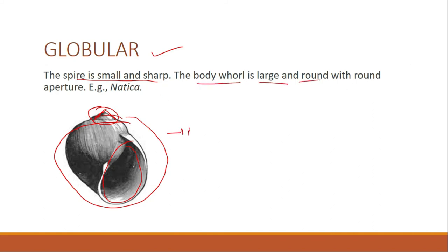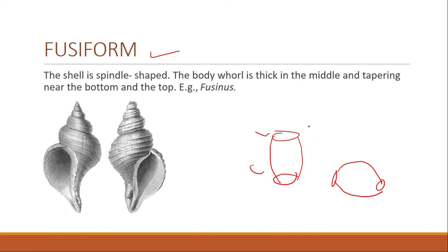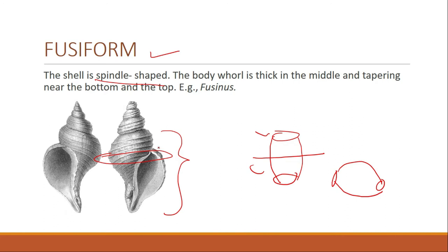Another shell form is fusiform. Here the shell is spindle-shaped — at the top and base the diameter is small compared to the middle portion, so it is thick in the middle and thinner toward the top and base. The body whorl is thick in the middle and tapering near the bottom and top, giving a spindle shape. The example is Fusus.